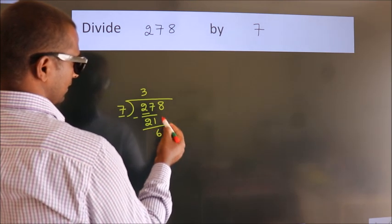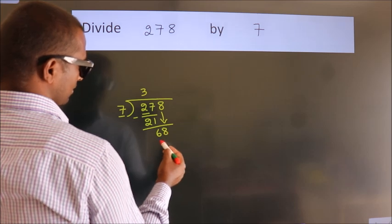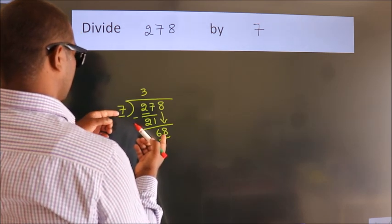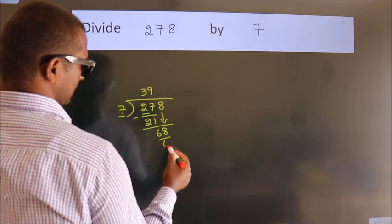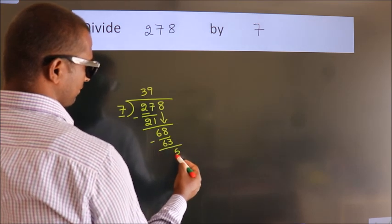After this, bring down the beside number. So 8 down, so 68. A number close to 68 in the 7 table is 7 nines, 63. Now we subtract. We get 5.